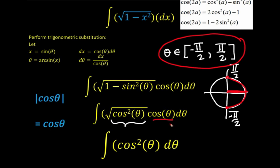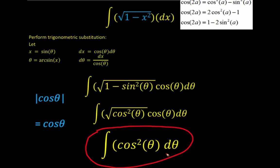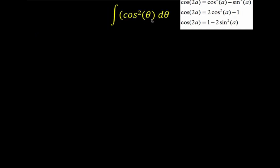We now evaluate the square root of cosine squared theta as cosine theta, and multiply by the other cosine theta. That gives cosine theta times cosine theta equals cosine squared theta, and we copy the differential d theta. At this point we need to simplify this expression in terms of the variable x.